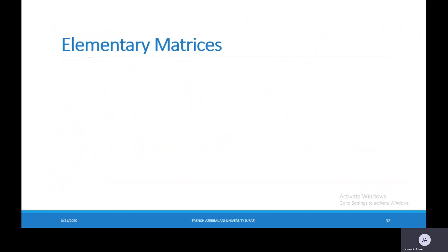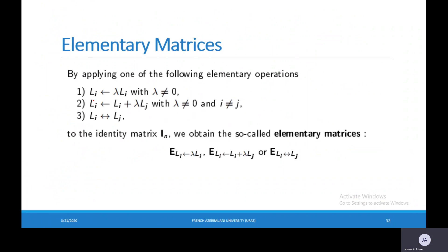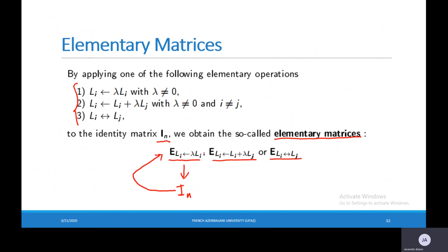In this lecture, I'm going to talk about elementary matrices and row equivalent matrices. By applying one of the following elementary operations to the identity matrix In, we obtain new matrices called elementary matrices. We use these notations for elementary matrices. For example, for the first one, we change the i-th row of In to lambda times the i-th row, and in this case we get this elementary matrix.